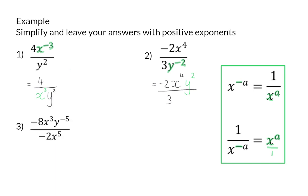In example three, start by simplifying the coefficients: minus eight divided by minus two is four. For the x bases, use the division law and subtract exponents: x to the power of three minus five gives x to the minus two. This is still multiplied by y to the power of minus five. Since we need positive exponents, only the four stays in the numerator — both x and y must move to the denominator to change their exponents to positive values.